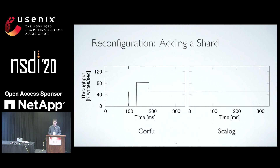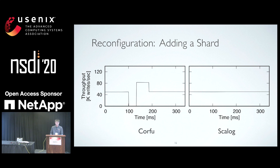Let's first look at the impact of reconfiguration by adding a shard to the shared log. The left figure is for Corfu and the right is for ScaleLog. The y-axis is throughput, and clients generate requests at a speed of 50,000 writes per second. The x-axis is real-time in milliseconds. For both ScaleLog and Corfu, we add a shard at time 100 milliseconds. During reconfiguration, Corfu has a hiccup of about 30 milliseconds because all Corfu clients and storage servers need to achieve agreement on a new mapping function. In contrast, ScaleLog's throughput is not affected by reconfiguration.